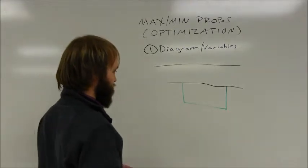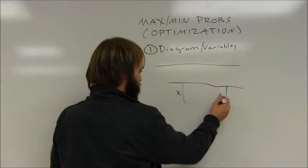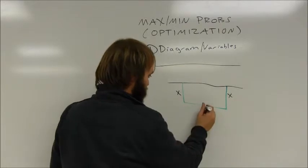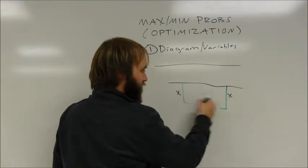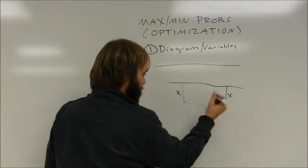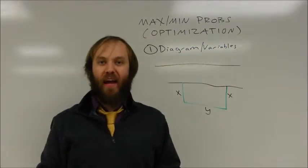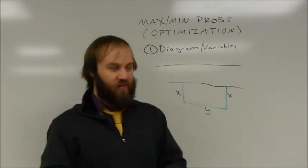What I'm going to do here is I'm going to call these two sides x for no particular reason. They're opposite sides of rectangles so they should be the same. I'm going to call this other side y. Just using two variables here.